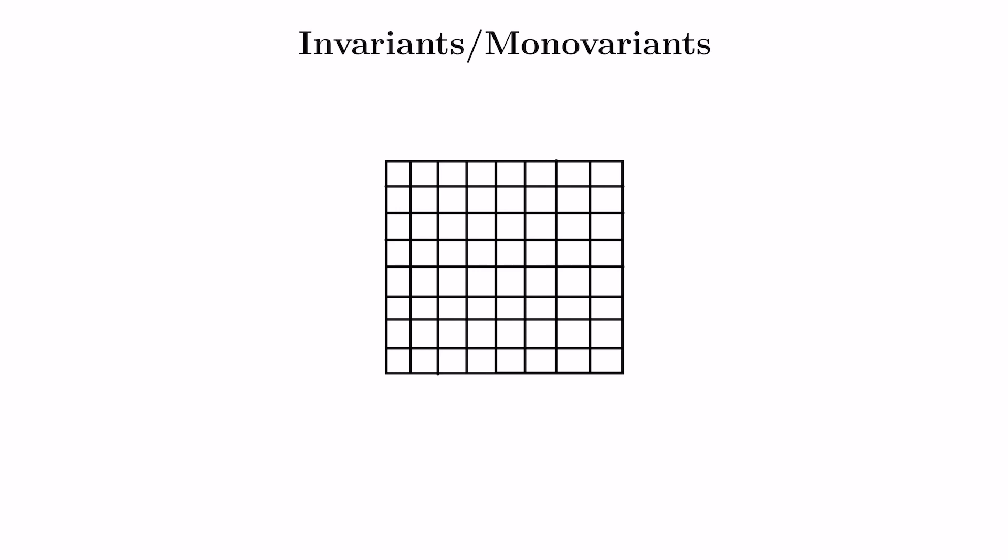In today's video, we're going to talk about invariants and monovariants. Invariants are things that don't change - variant means change and 'in' means not. Whereas monovariants are things that change, but only in one direction. We're going to solve a few problems by looking for things that either don't change or change in a manageable way, which will allow us to get insight on how to solve the problem.